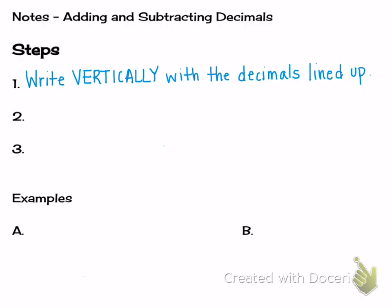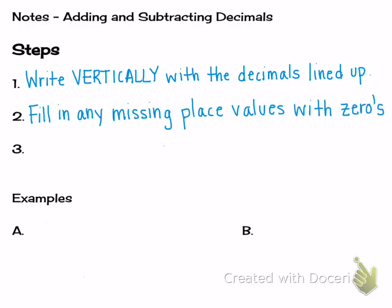The second thing you're going to do is fill in any missing place values with zeros. Your numbers aren't always going to go to the same place value, so this is a strategy that can help with those types of mistakes. After you have done that, the last thing you need to do is add or subtract. When you are adding or subtracting, your decimal just drops straight down into the problem that you are solving, exactly where it is lined up.